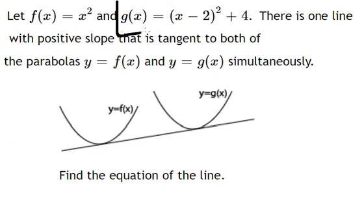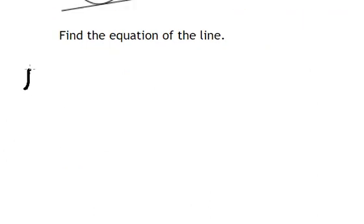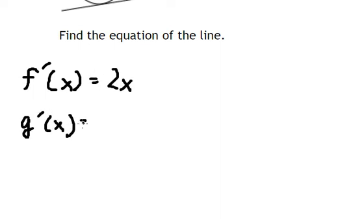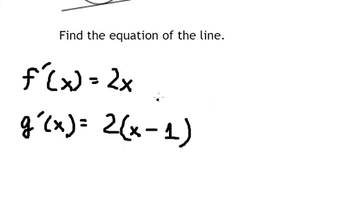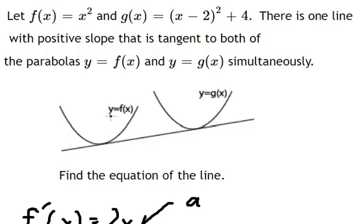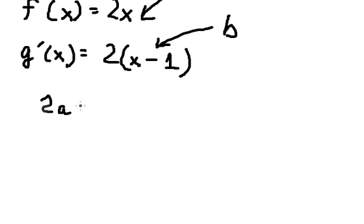First, we need to find the derivative of this function and this function. The tangent line touches both at the same time, so let's say this point is a and this point is p. Because they have the same slope, we know that 2a equals 2(b minus 1).